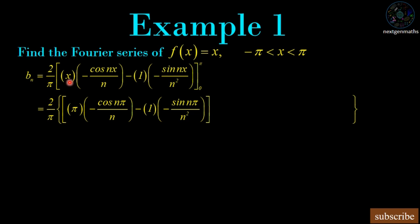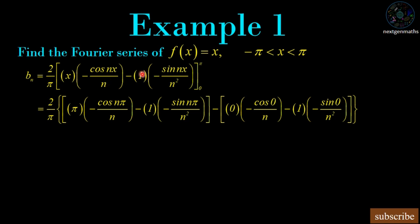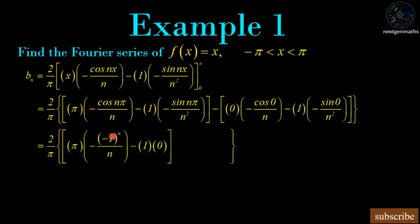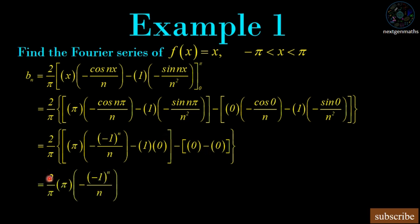Substituting the upper limit x = π: π·[−cos(nπ)/n] − sin(nπ)/n². Then substituting the lower limit x = 0: 0·[−cos(0)/n] − sin(0)/n² = 0. Using cos(nπ) = (−1)ⁿ and sin(nπ) = 0, we get bₙ = (2/π) · [−π(−1)ⁿ/n] = 2(−1)ⁿ⁺¹/n.